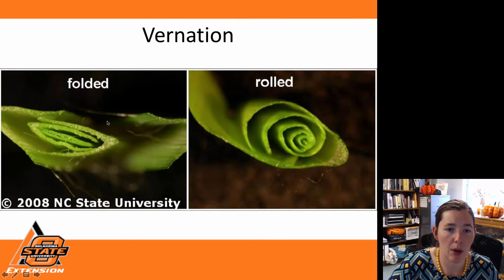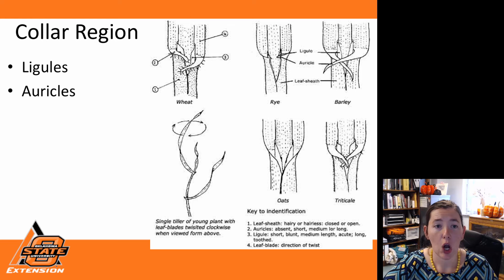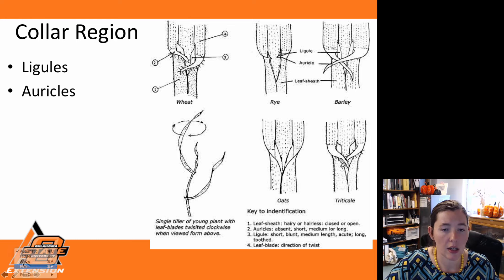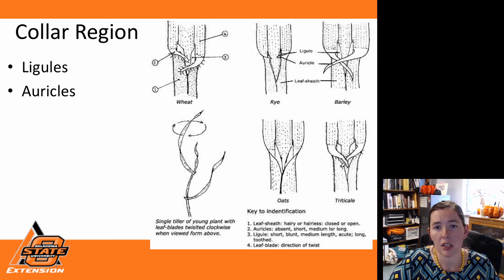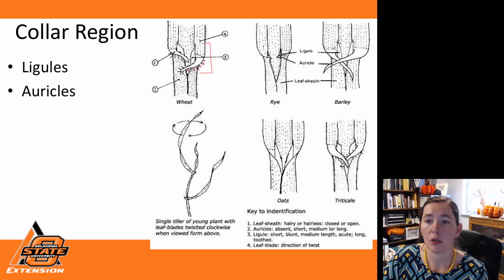Here's vernation on actual live plants — we can see very folded vernation compared to this grass plant where it's rolled up inside. Looking at the collars of different crops: wheat here has somewhat longer auricles with very small fringe hairs, and a pretty large ligule on the back side wrapping around the main stem. Our rye has pretty much non-existent auricles and a very short ligule.